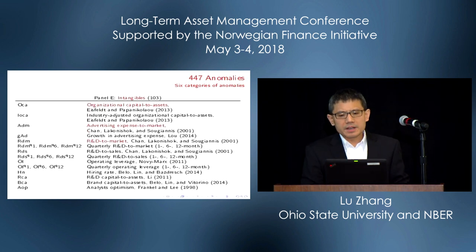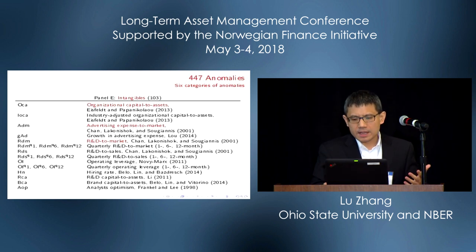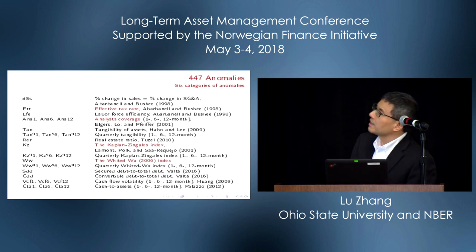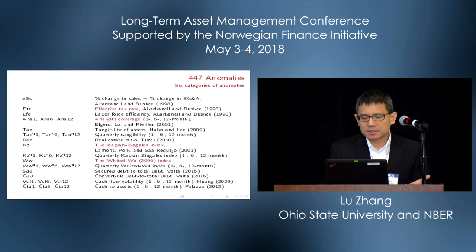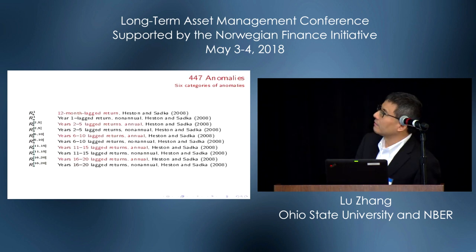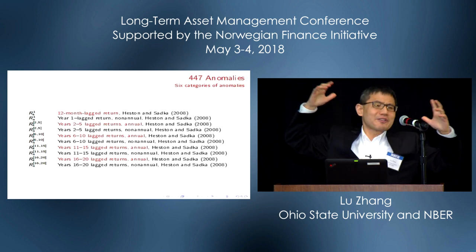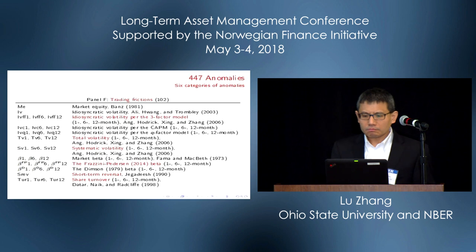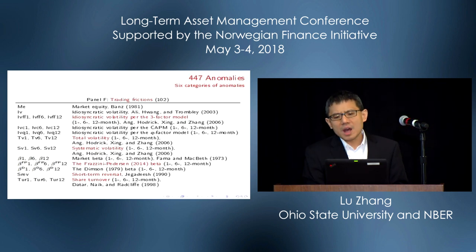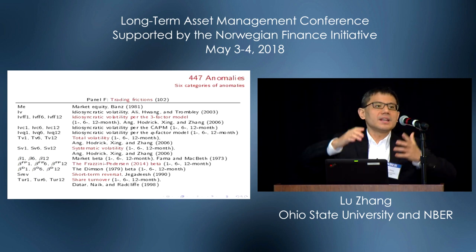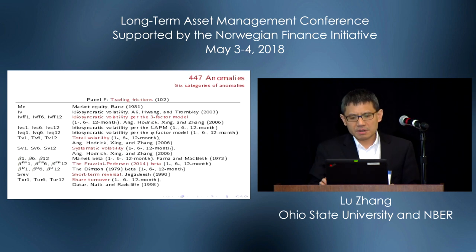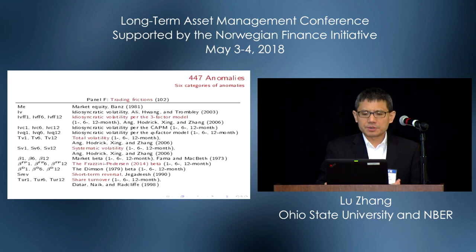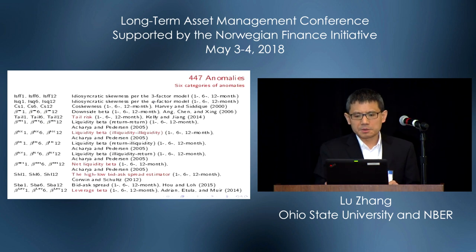Intangibles has 103 variables, including organizational capital, advertising, R&D, price delay, financing constraints in different versions, and a highly influential accounting literature on accrual quality and earnings quality. Also dispersion of analyst forecasts, and a very nice paper by Hess and Sadka documenting exotic-looking seasonality variables — none of the factor models can do anything about them. Trading frictions, the last category, has 102 variables including liquidity and frictions variables, different versions of volatility (idiosyncratic, total, systematic), market beta, short-term reversal, turnover, dollar trading volume, zero trading days, maximum daily return, total skewness, tail risk, liquidity beta, and bid-ask spread.